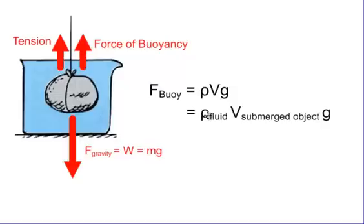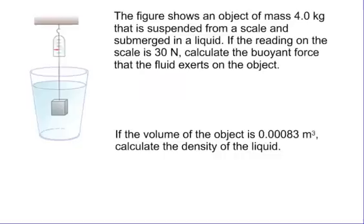The volume is the volume that is submerged. If it's completely submerged, guess what? It's the entire object, and it's the water that has been displaced. It's the volume that's been displaced times gravity. So it's the density of the fluid, volume of the submerged object, and gravity.